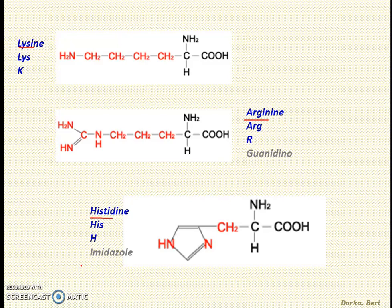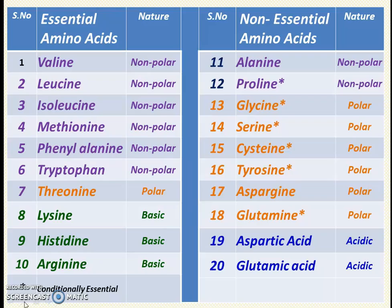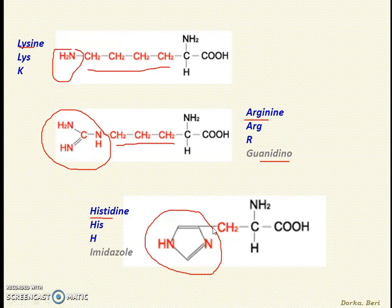The last set of structures is lysine, arginine, and histidine — all basic amino acids because they contain an extra amino group. Lysine: write four CH2 groups with a terminal NH2 group. Arginine contains a special guanidino group followed by three CH2 groups. Histidine contains a special imidazole ring. These are all 20 standard amino acid structures — pause the video, remember all the structures, then go to the next slide.